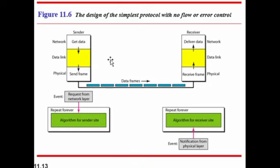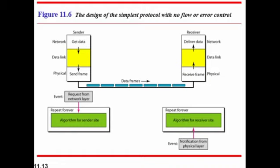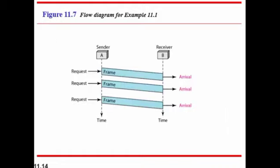The simplest protocol design shows the sender and receiver connected through the data link layer, ensuring efficient data transmission. This simple diagram illustrates the flow of frames in the simplest protocol with no flow or error control mechanisms involved.